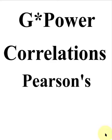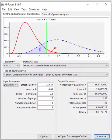What would the minimum sample size be needed to run a correlation, Pearson's correlation? We'll find out in G-Power. G-Power to the rescue.